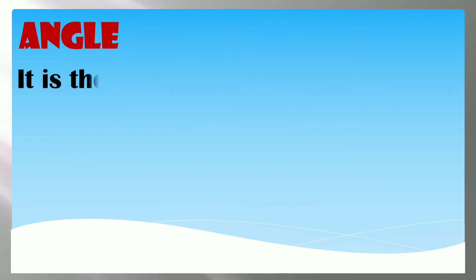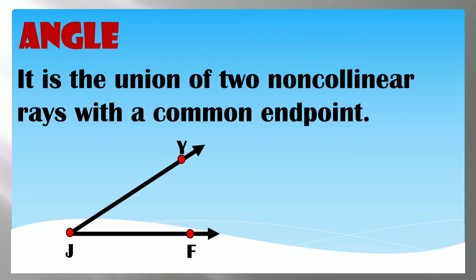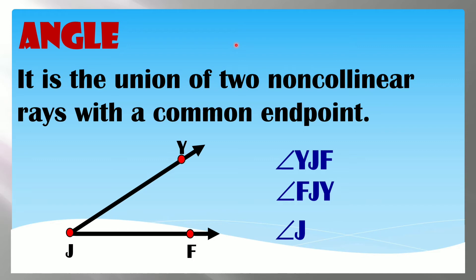An angle is the union of two non-collinear rays with a common endpoint. When naming an angle, we can use three letters with the vertex in the middle. So this angle can be named Angle YJF, Angle FJY, or simply Angle J using just the vertex.